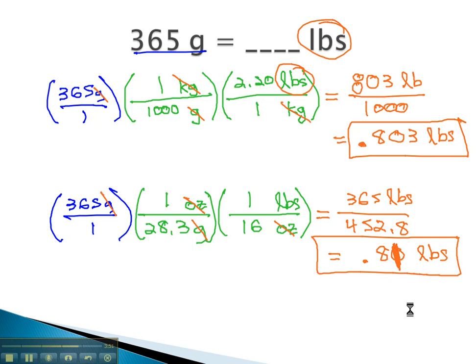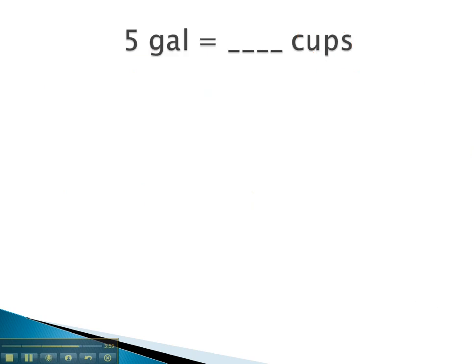Let's try another example. Here, we're changing 5 gallons into cups. If we put the 5 gallons over 1, we can start making conversion factors. Get rid of gallons by putting them in the bottom. And while we can't change to cups, we can change gallons into quarts, because 1 gallon is 4 quarts, and the gallons will divide out.